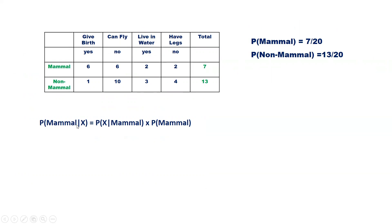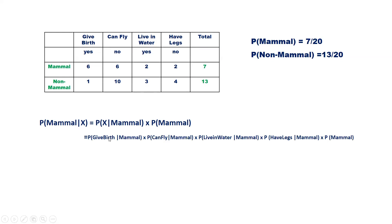Now we will compute the probability of mammal given the new instance X. Using Naïve Bayes theorem, probability of mammal given X equals probability of X given mammal times probability of mammal. Since we assume all features are independent of each other in the Naïve Bayes classifier, we can rewrite this as: probability of give birth given mammal × probability of can fly given mammal × probability of live in water given mammal × probability of have legs given mammal × probability of mammal.